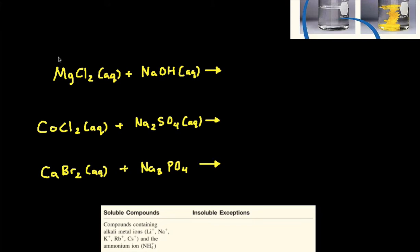So the first step, we're going to want to write the charges of each of the ions. Magnesium is going to have a positive 2 charge, because it's in the second column of the periodic table. Chlorine is a halogen, so it's going to have a negative 1 charge.